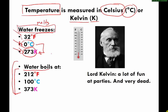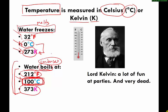The other temperatures to memorize are the boiling and condensation points of water. Water boils at 212 degrees Fahrenheit, or 100 degrees Celsius — 100 is much easier to remember than 212. To convert to kelvin, add 273: 100 plus 273 is 373, so water boils at 373 kelvin.